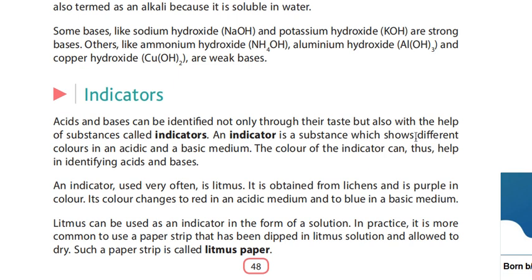So litmus indicator changes its color in acidic and basic medium to identify whether a given substance is acidic or basic in nature. Litmus is available in the form of solution and also in the form of paper strips — blue litmus paper and red litmus paper. To check an acid, we use blue litmus paper which turns red in acidic medium. To check a base, we use red litmus paper which turns blue in basic medium. Thanks for today's class — tomorrow we'll do more about indicators and bases.